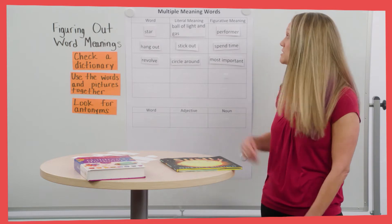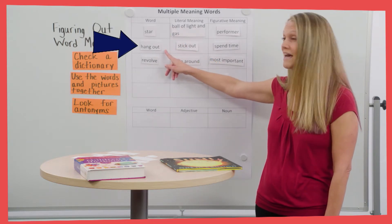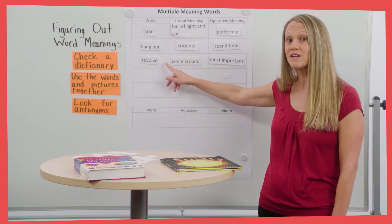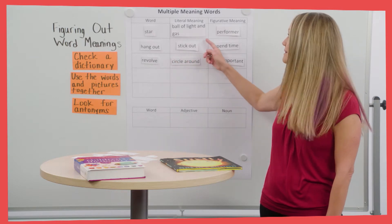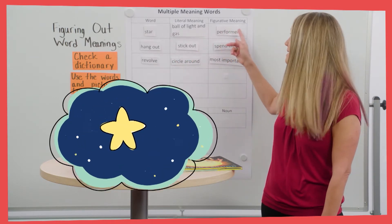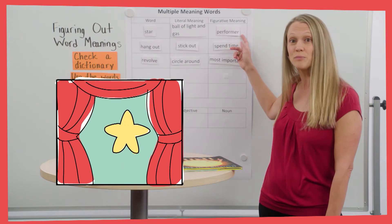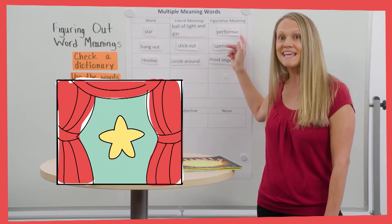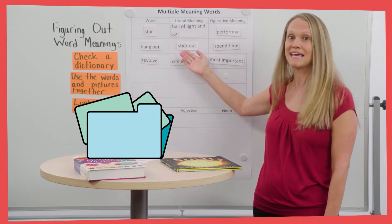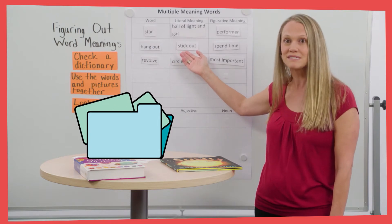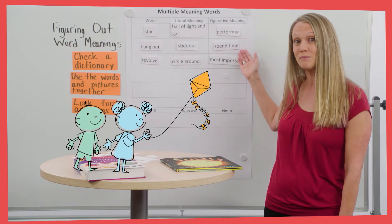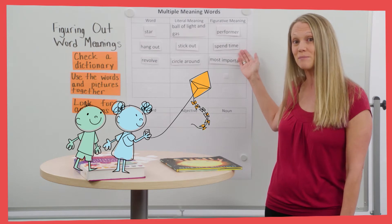We learned star, hang out, and revolve. Remember that a star can be a literal ball of light and gas in outer space, or figuratively an entertainer or performer. Hanging out can literally mean something sticking out of something else, or it can figuratively mean spending time with the same people or in the same place.